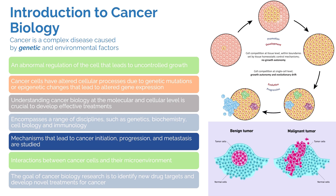Understanding cancer biology at the molecular and cellular level is crucial to develop effective treatments. As shown in this figure, one single cell that starts growing uncontrollably can eventually become a tumor with various subtypes, because it evolves over time to keep evading the immune system.